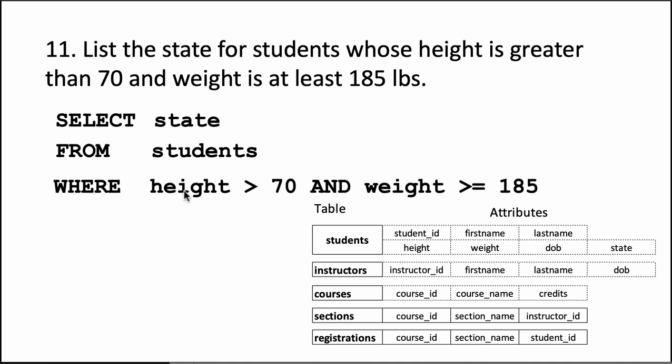Okay, now of course whether you put the weight first or the height first doesn't really matter. So you could have said weight greater than or equal to 185 and height greater than 70. That would be fine as well. Okay, but the whole point is to see the difference between greater than and greater than equal to. You have to be sensitive to these sorts of things when you're writing SQL or in general as well.